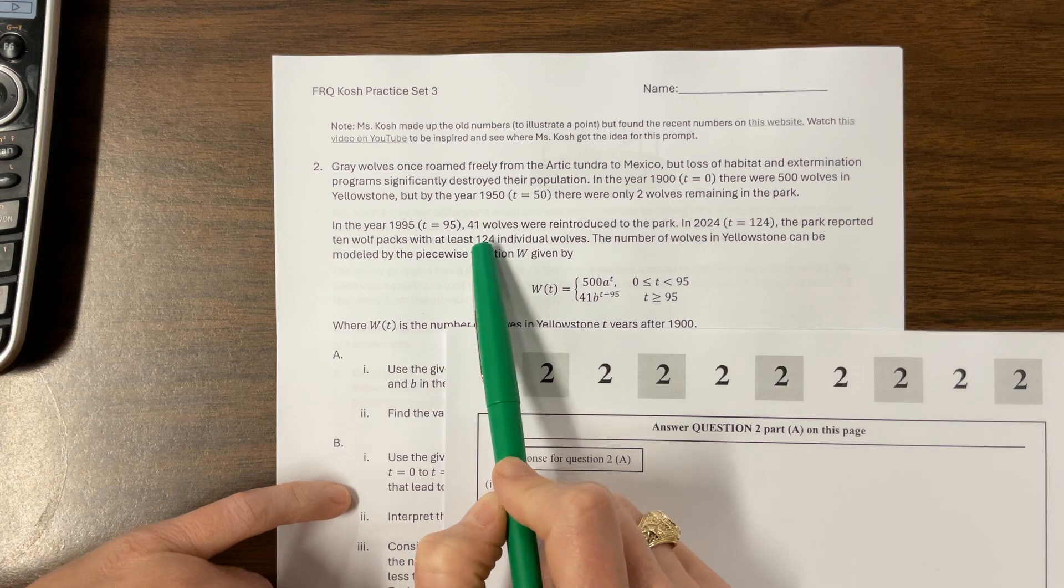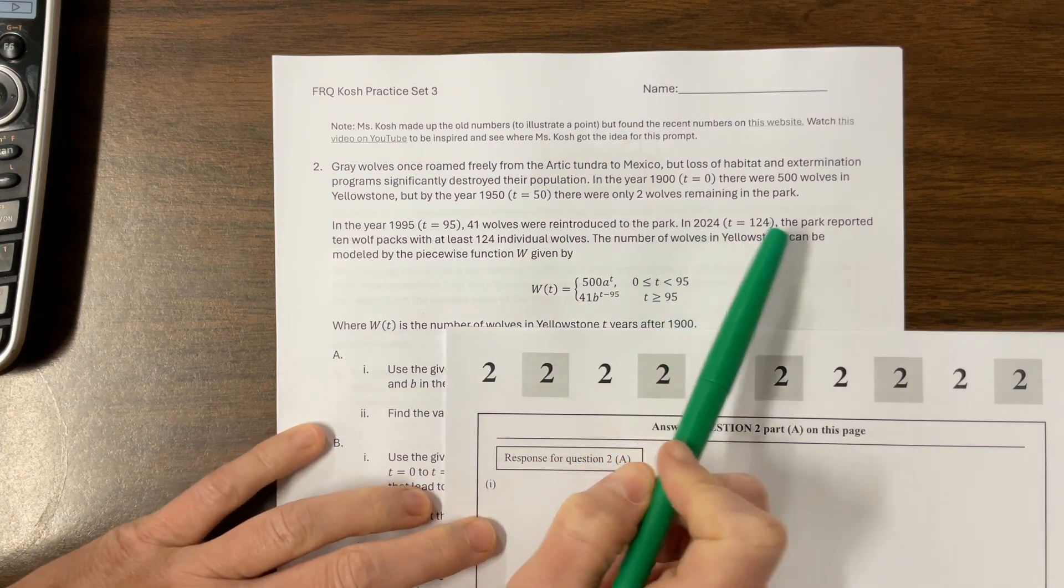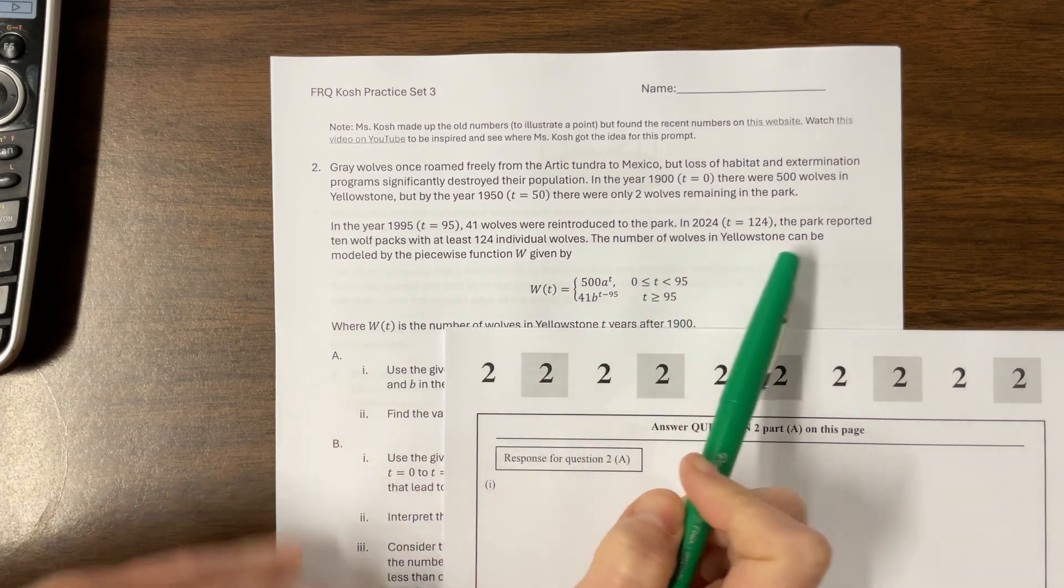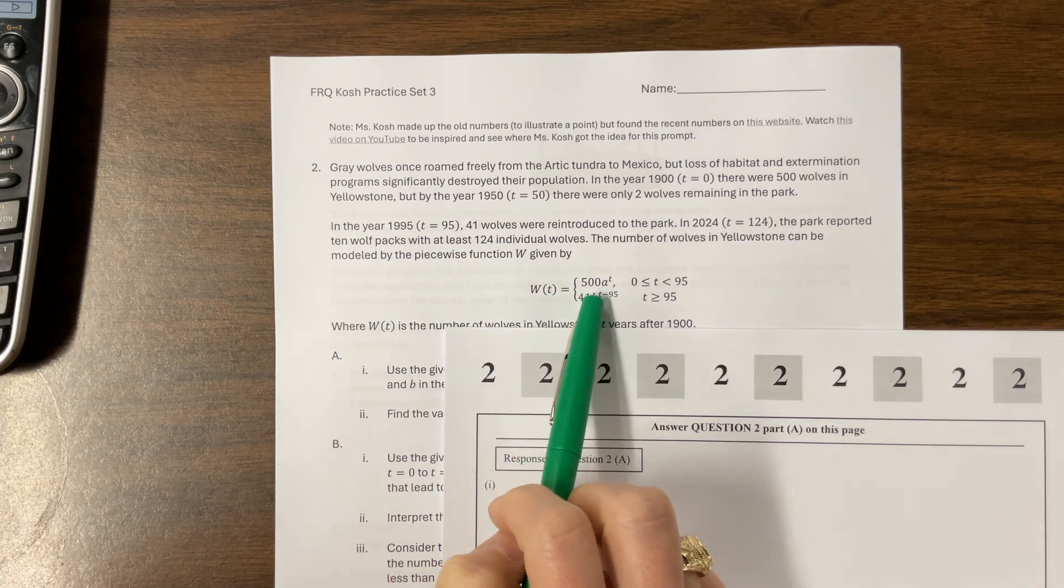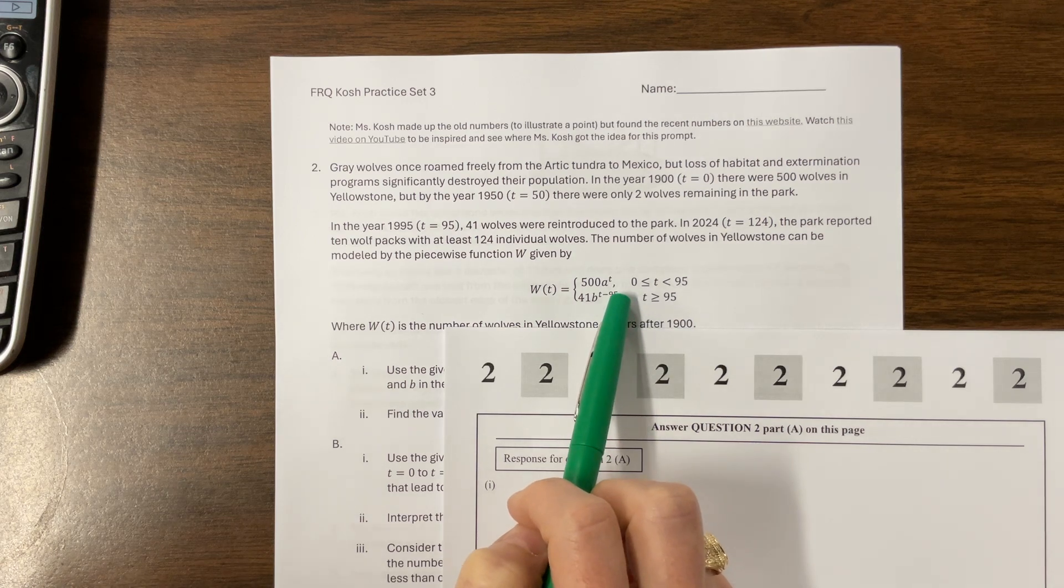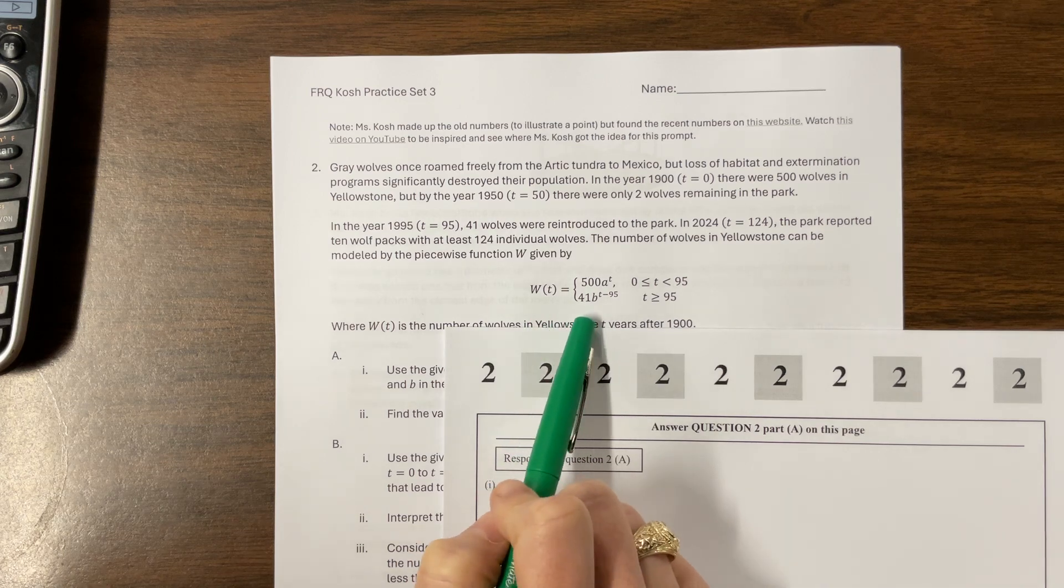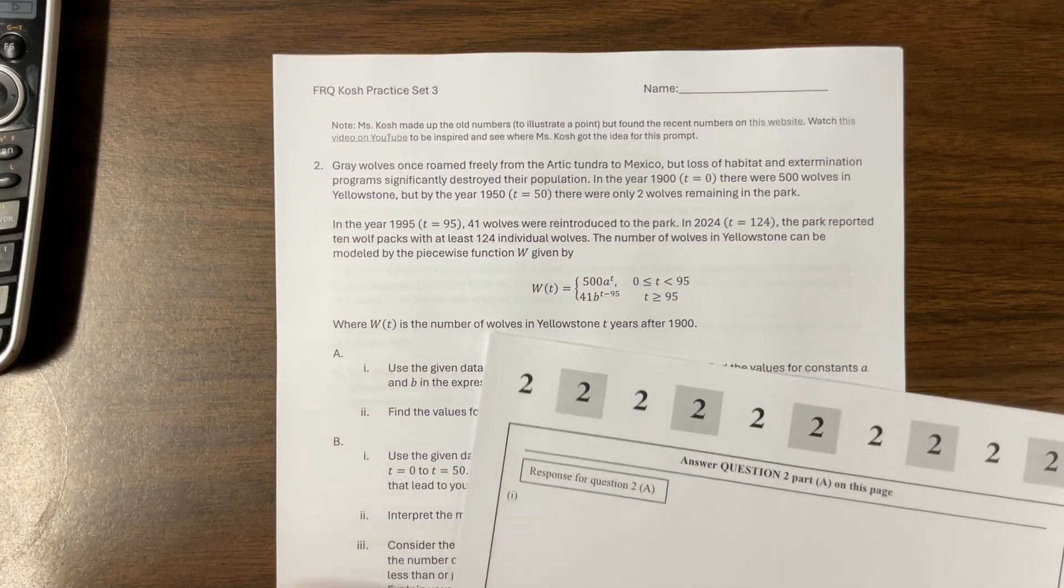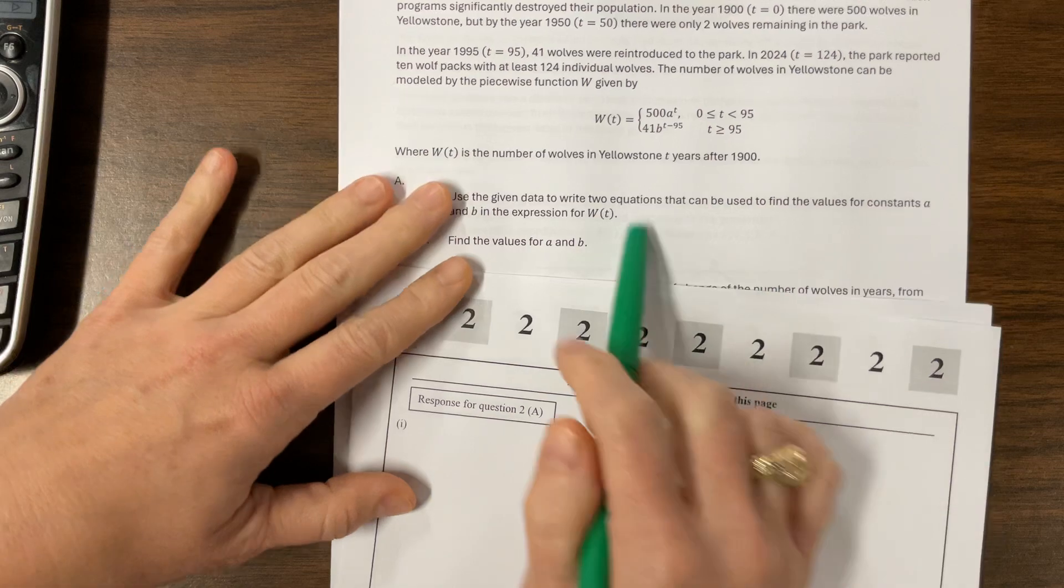These are accurate numbers from what I found online. It says in the year 1995, 41 wolves were reintroduced to the park. In the year 2024, the park reported 10 wolf packs with at least 24 individual wolves. So the number of wolves in Yellowstone can be modeled by the piecewise function given by W(t) equals 500a^t on the interval from 0 to 95, not including 95, and 41 times b^(t minus 95), where t is greater than or equal to 95.